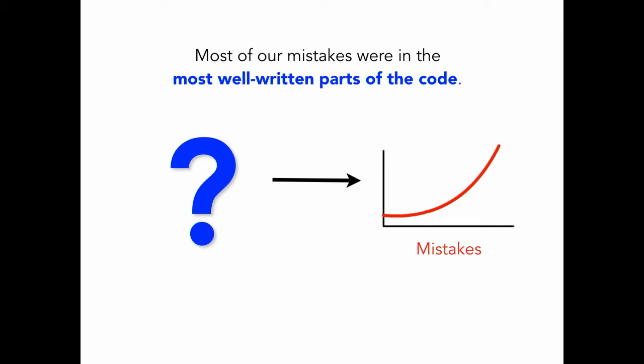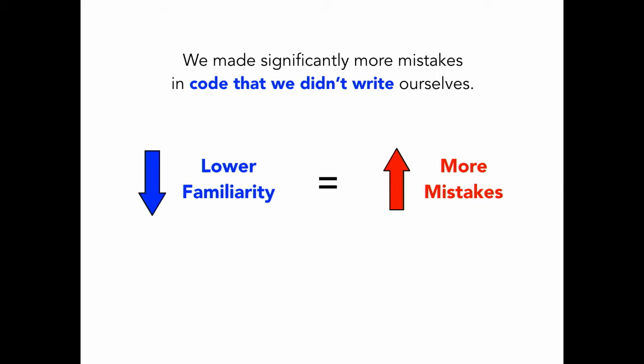So I started digging around in the data. And the correlation I did find was this: we made significantly more mistakes in the code that we didn't write ourselves. And while that made some sense — lower familiarity increasing the likelihood of mistakes — I couldn't help but think there had to be more to the story than this.